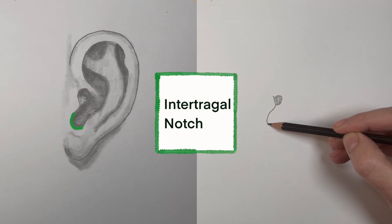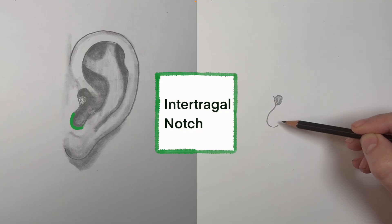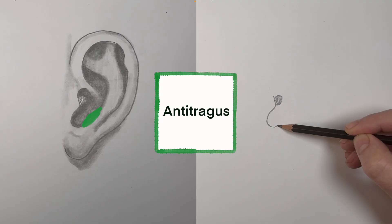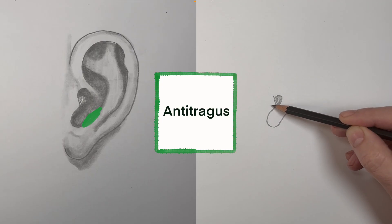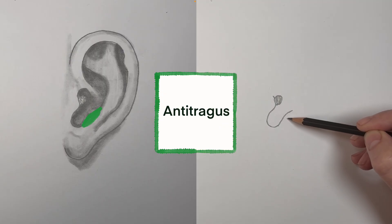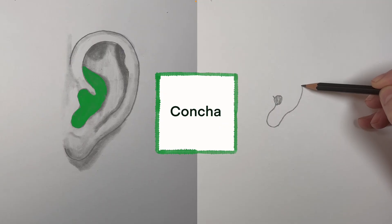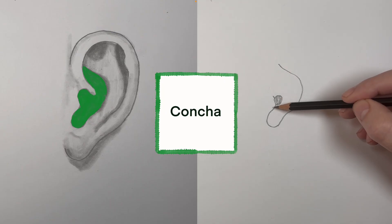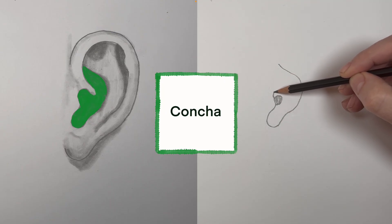Just below the tragus is the intertragal notch. So this is a notch, a little groove, that's between the tragus and something else. And that something else is the anti-tragus. The anti-tragus is another bump of cartilage that is directly across from the tragus. The tragus, the intertragal notch, and the anti-tragus form the bottom part of the concha.